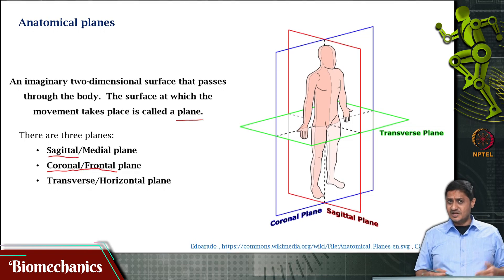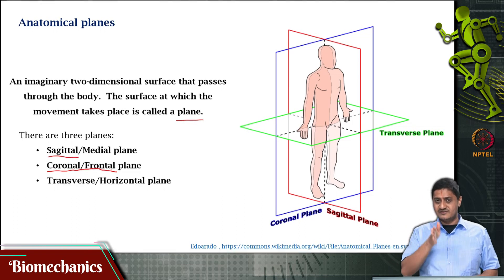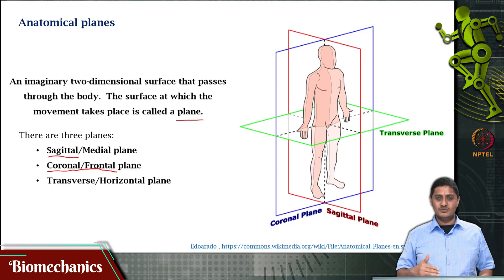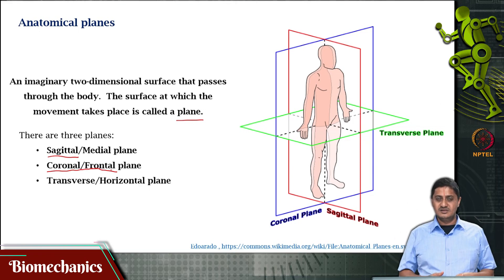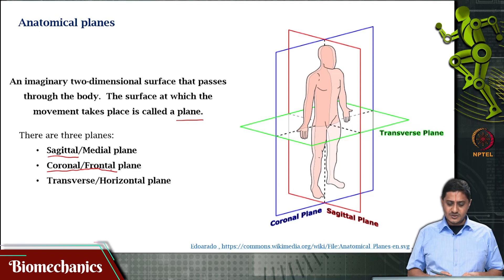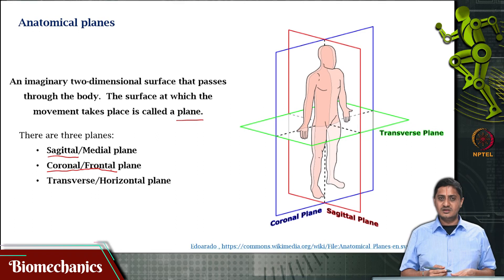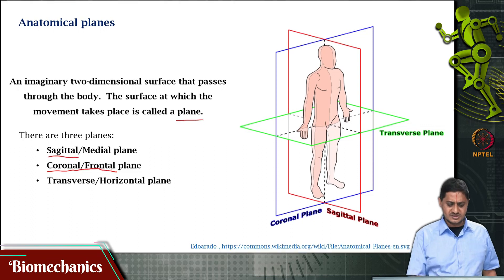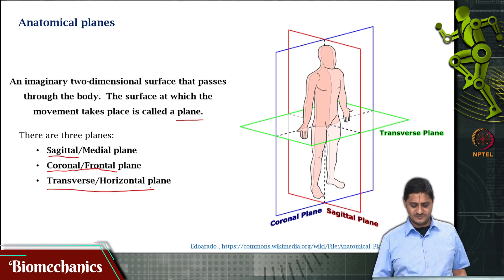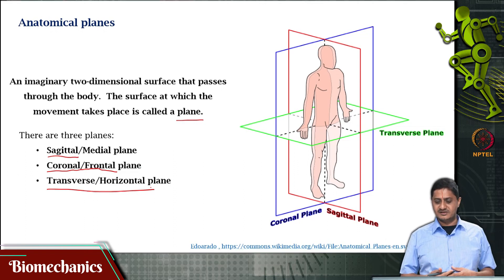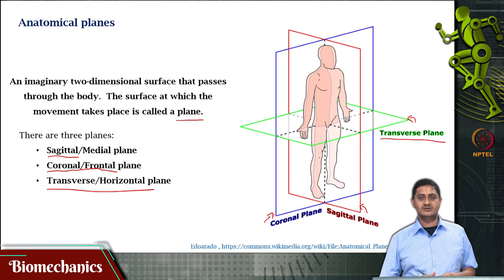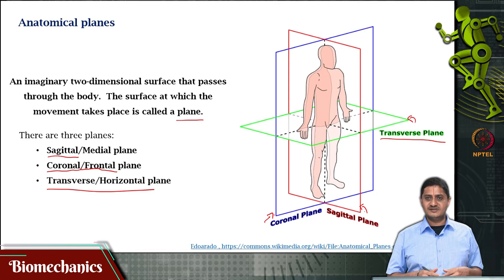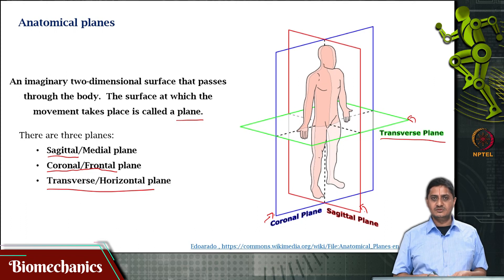There are three dimensions, so we have covered two planes. The third one divides the body into a top and a bottom — not necessarily two halves. That plane which divides the body into a top portion and a bottom portion is called the transverse plane or the horizontal plane. To summarize: the transverse plane is shown in green, the sagittal plane in red, and the coronal plane in blue. The coronal plane divides the body into front and back, the sagittal plane into left and right, and the transverse plane into top and bottom.